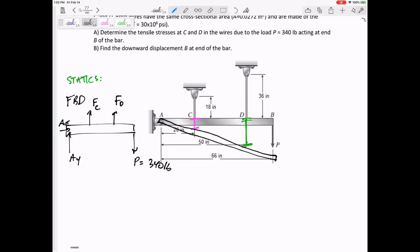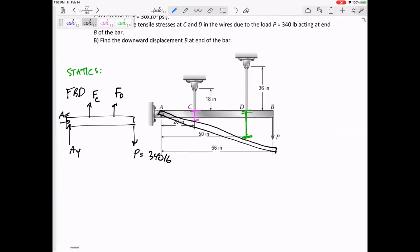This one right here, if we push down when the force of P is 340 pounds, let's solve for the forces in cable C and cable D, and if I know the forces in cable C and cable D, then I can answer the question about the stresses in wire C and wire D.